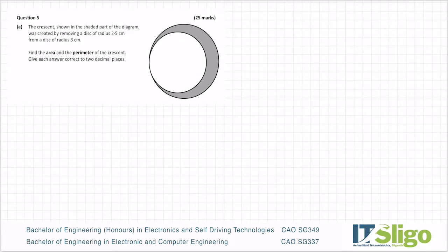I've just copied the question over here so we can work away on it. Let's do part A first. The crescent shown in the shaded part of the diagram was created by removing a disk of radius 2.5 centimeters from a disk of radius 3 centimeters. Find the area and the perimeter of the crescent, giving each answer correct to two decimal places.